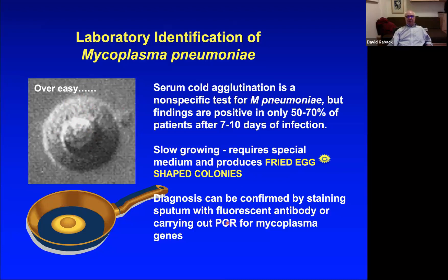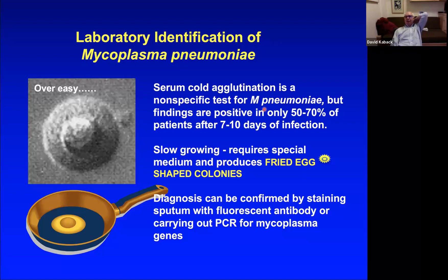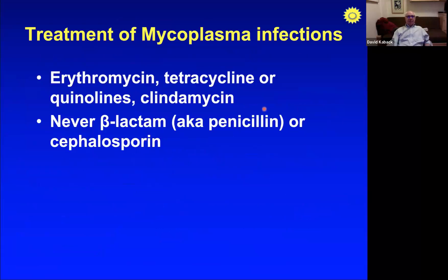Diagnosis is now done by PCR for mycoplasma ribosomal genes. There is an old bedside serum cold agglutinin test — serum placed on ice shows a precipitate about two-thirds of the time with mycoplasma — but it's nonspecific (several bacteria cause it), so it's an outdated test. Treatment: anything but penicillin — there is no peptidoglycan cell wall target.